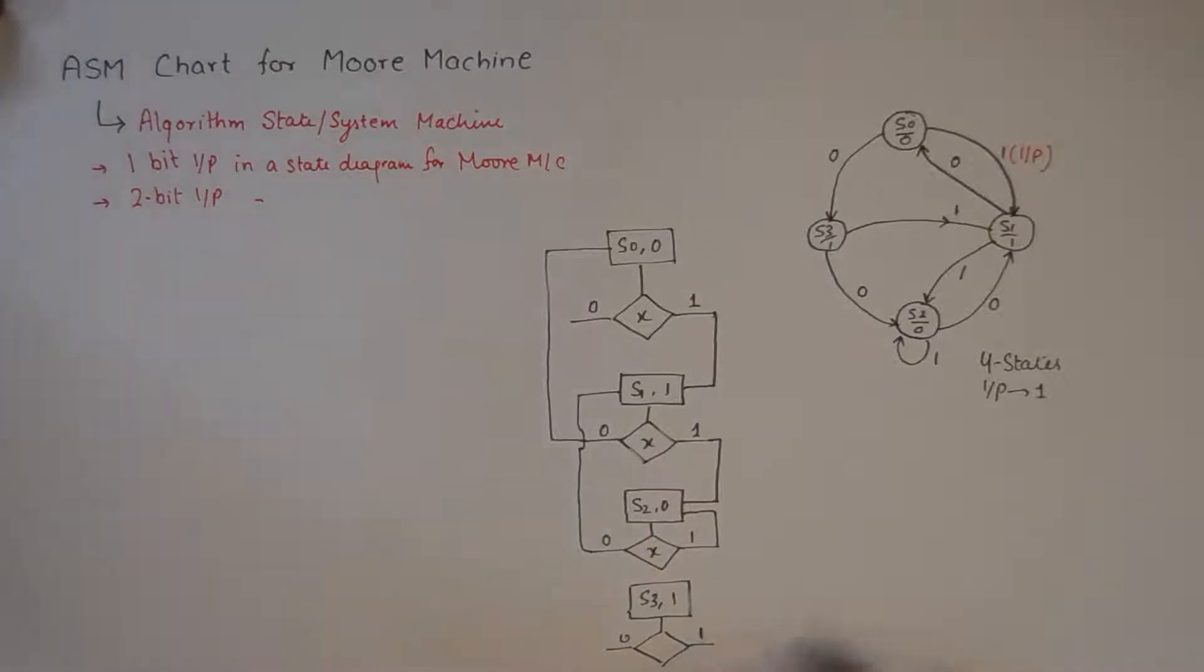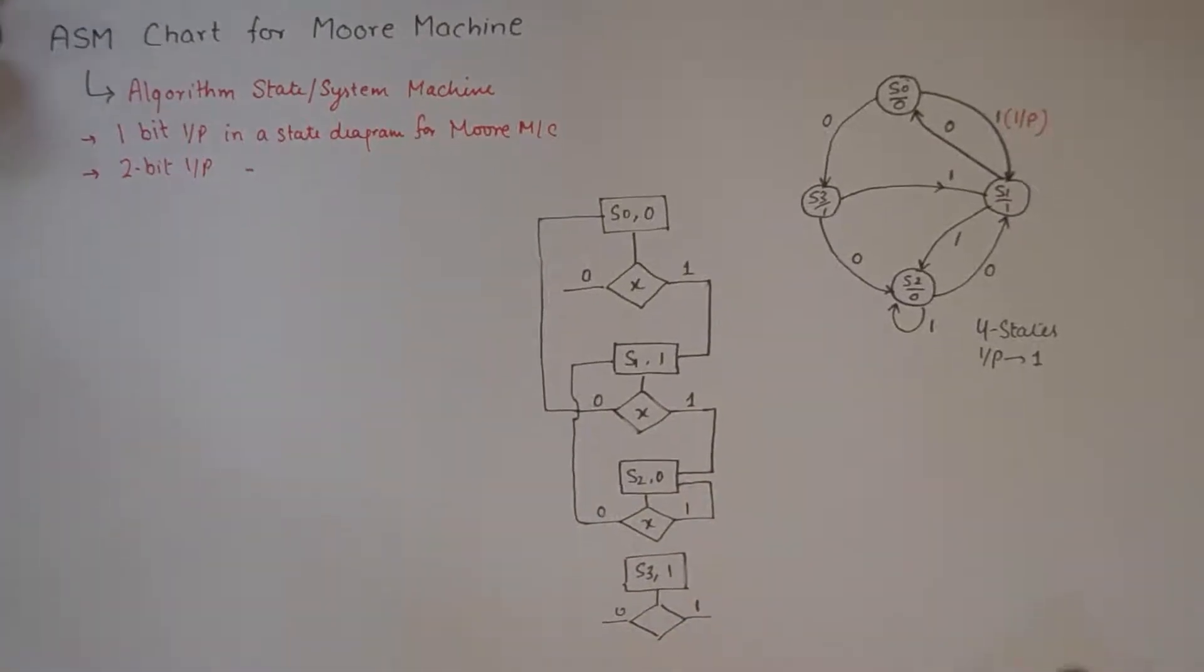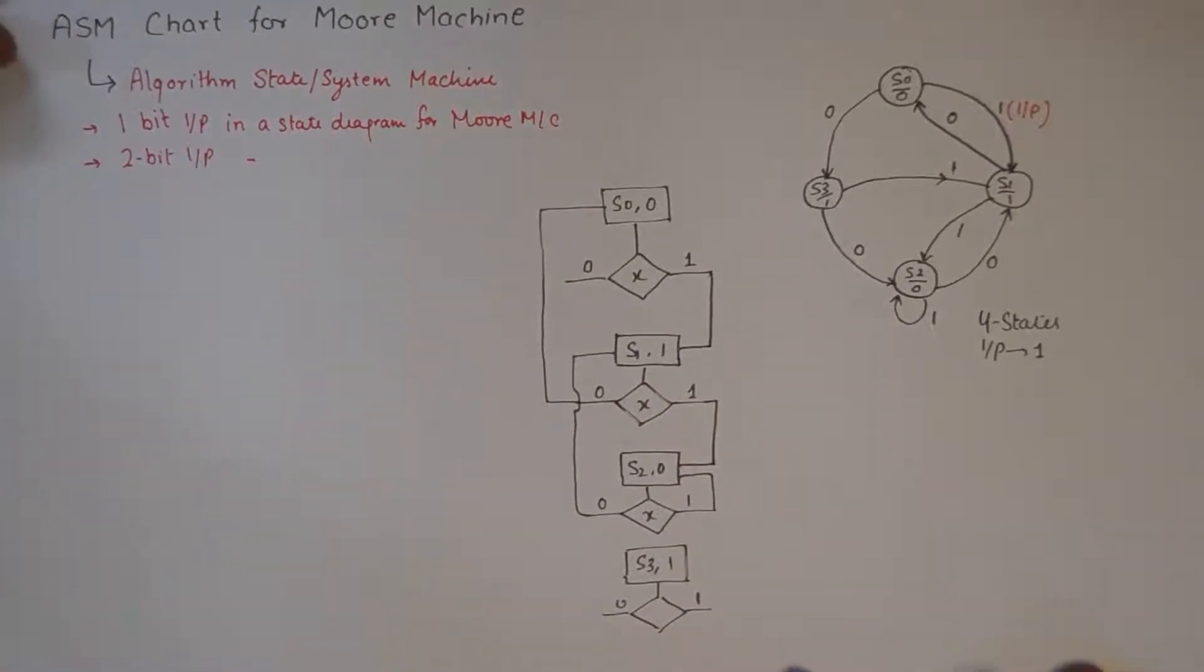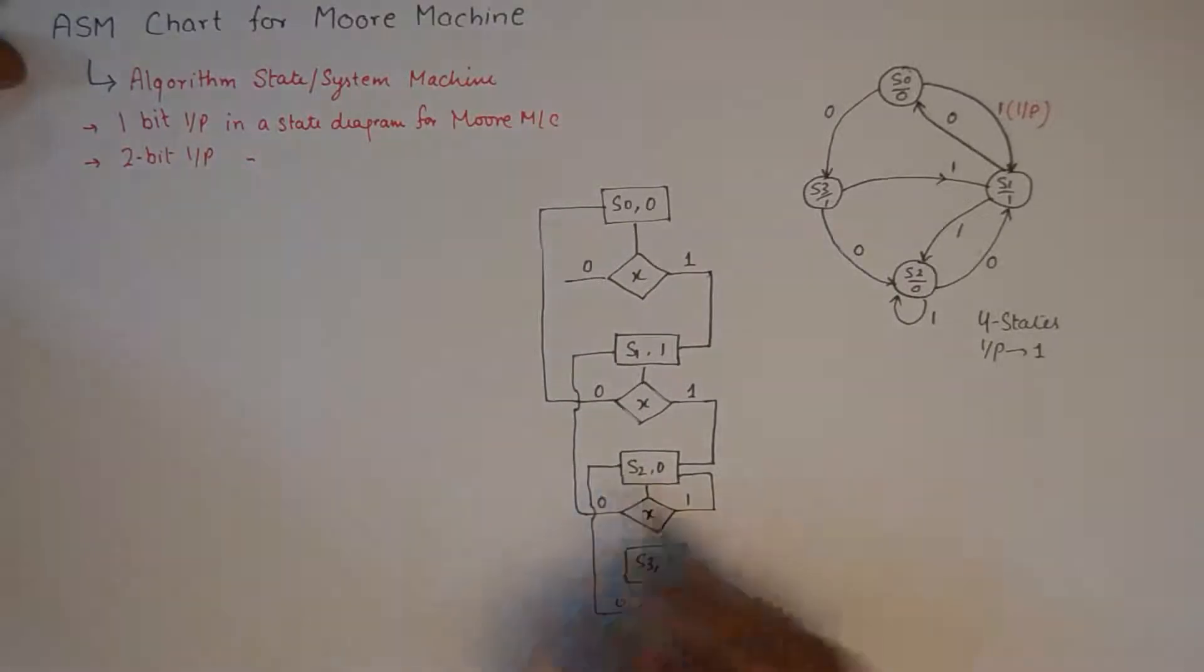Finally I have state 3 with an output 1. Again two decisions to be made: 0 at S3 will take me to S2, and a 1 at S3 will take me to S1.